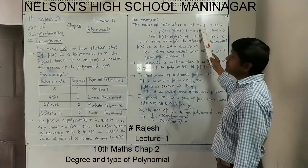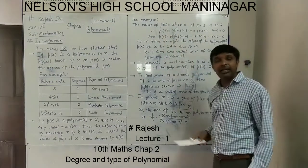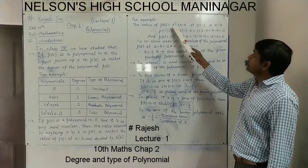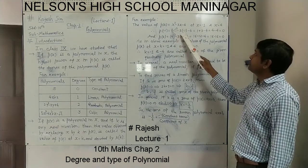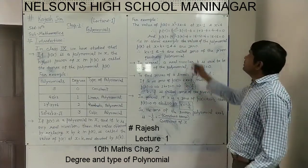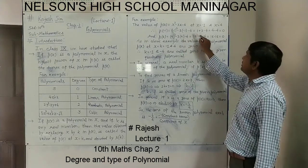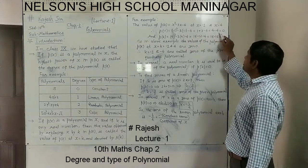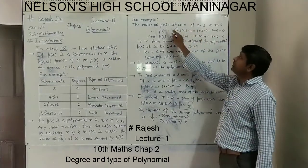The polynomial p(x) is equal to x squared minus 3x minus 4. We want to find the value of p(x) at x equal to minus 1 and x equal to 4. For x equal to minus 1, p(x) becomes p(minus 1). Wherever x appears we place minus 1: (minus 1) squared minus 3 times (minus 1) minus 4. Minus 1 squared is plus 1; minus times minus gives plus 3; and minus 4 as it is. So 1 plus 3 minus 4 equals 0. At x equals minus 1, the polynomial's value is 0.